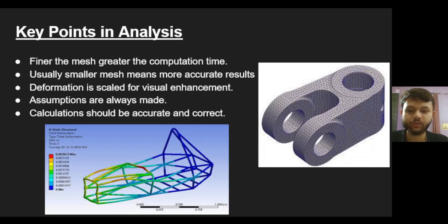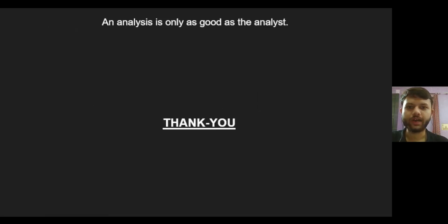This is our final slide, the key points to keep in mind while doing analysis. The method we use is the FEM method, which stands for Finite Element Method. In this method, a large system is divided into smaller, simpler parts that are called finite elements. This process is called meshing. Usually smaller mesh means more accurate results, but the computing time also increases significantly, hence a balance is to be made. While analyzing the results, we should be careful that we are not seeing the actual deformation. Instead, the deformation is scaled for visual enhancement. Apart from this, the important point is that the forces and other parameters that you calculate should be accurate. I will end with the phrase: an analysis is only as good as the analyst. That was all from today's session. I hope you learned something new. Thank you.